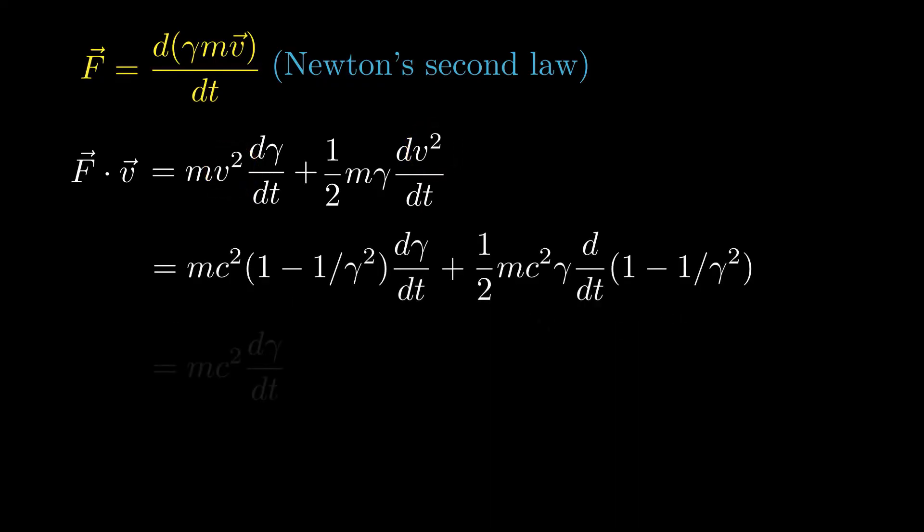We can rearrange this result to show that the time derivative of the gamma factor equals 1 over MC squared times the dot product of the force and the velocity.